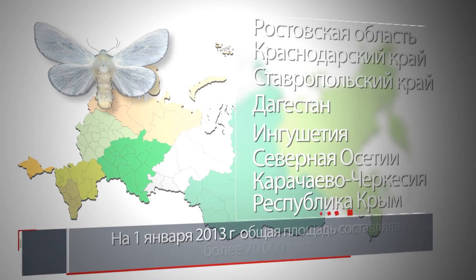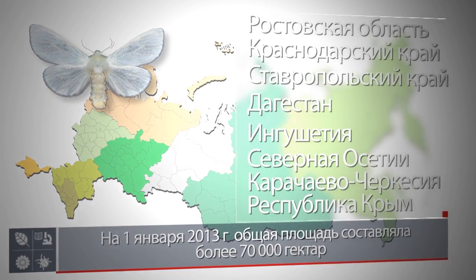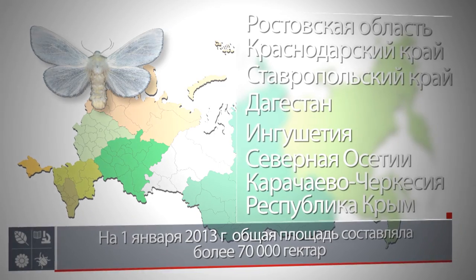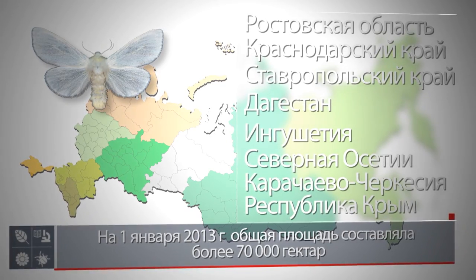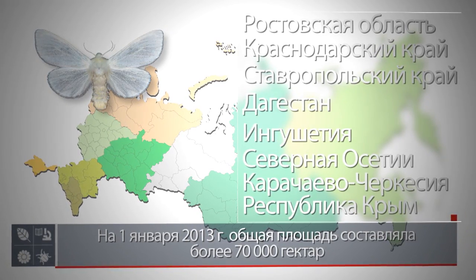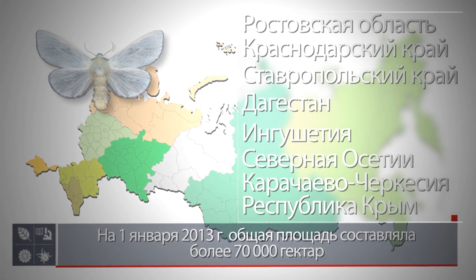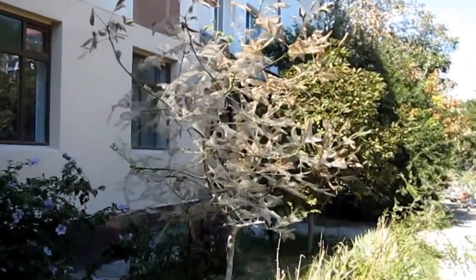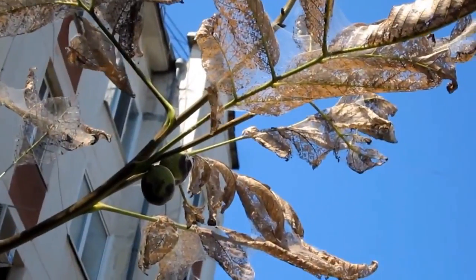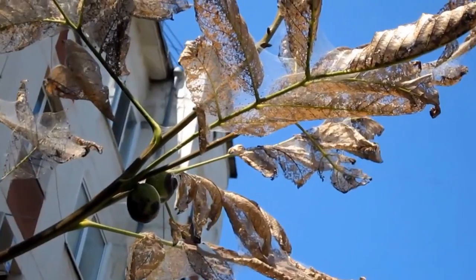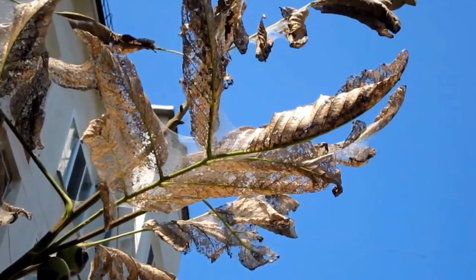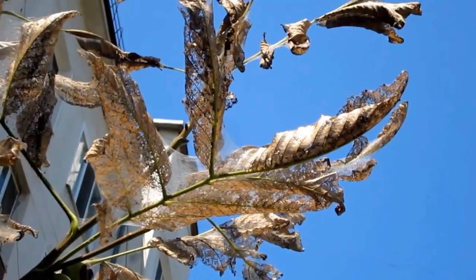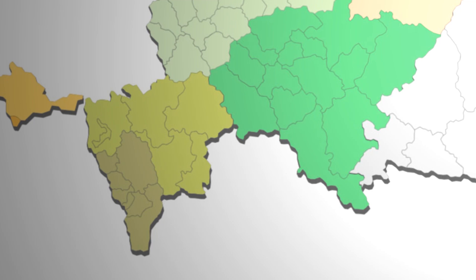На данный момент вредитель в некоторой степени стабилизировал свой очаг, который в пределах этого региона и продолжает существовать. В благоприятные годы возможно незначительное расширение ареала в восточном направлении. Отдельные, пока неустойчивые очаги зарегистрированы в Поволжье — в Волгоградской, Астраханской областях и Республике Калмыкия.